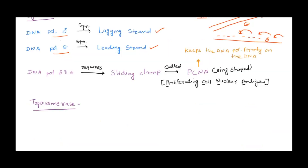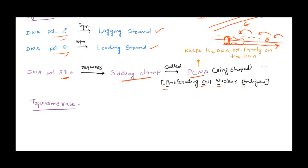DNA polymerases delta and epsilon require a sliding clamp — a ring-shaped protein that helps the polymerase attach firmly to the DNA and synthesize the whole strand without falling off. This sliding clamp is called PCNA, which stands for Proliferating Cell Nuclear Antigen, named because it is found in large quantities in proliferating cells. PCNA acts as the ring around the polymerase to keep it on the DNA.